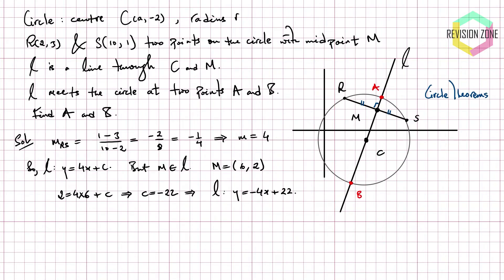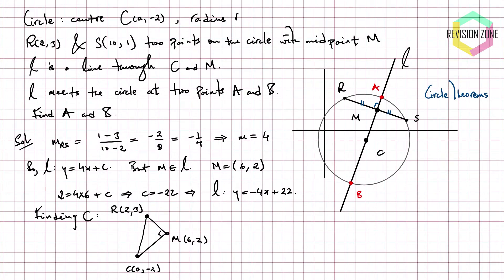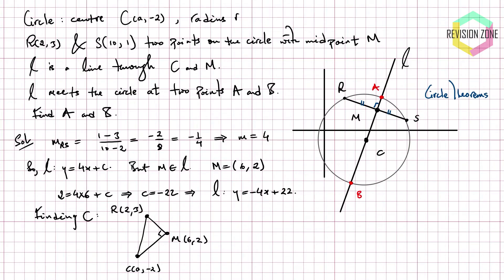Now we need to find the equation of our circle. To do that, we need essentially two things: a centre and a radius. We do not know the radius, and we do not know the centre fully. So we're going to figure out the centre first. We're going to focus our attention on the triangle R, M, C. We know that this triangle is a right-angled triangle, and we explicitly have the coordinates for R and M, while only the coordinate for C is partly unknown. What we can do is apply Pythagoras' theorem to this right-angled triangle to figure out what a is going to be.